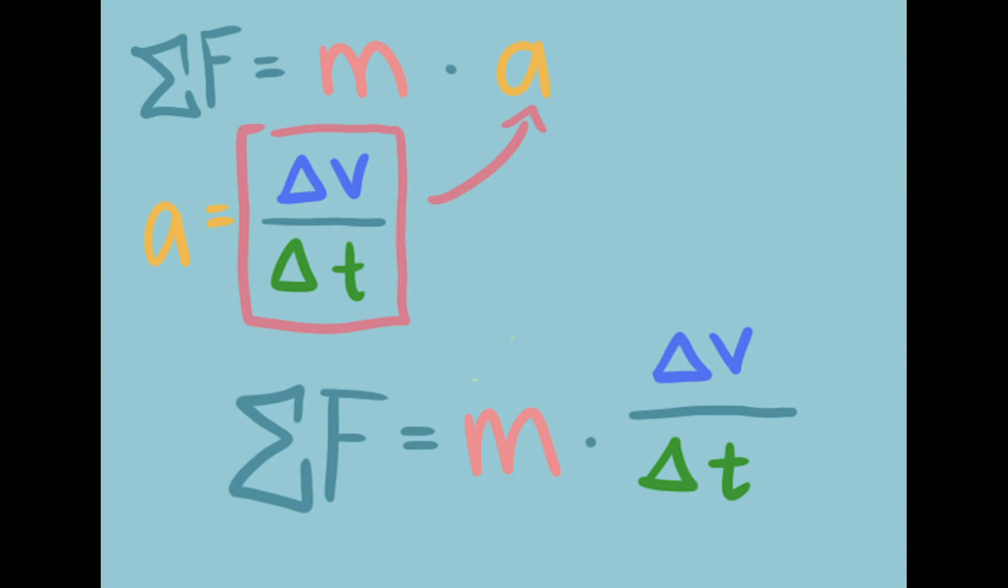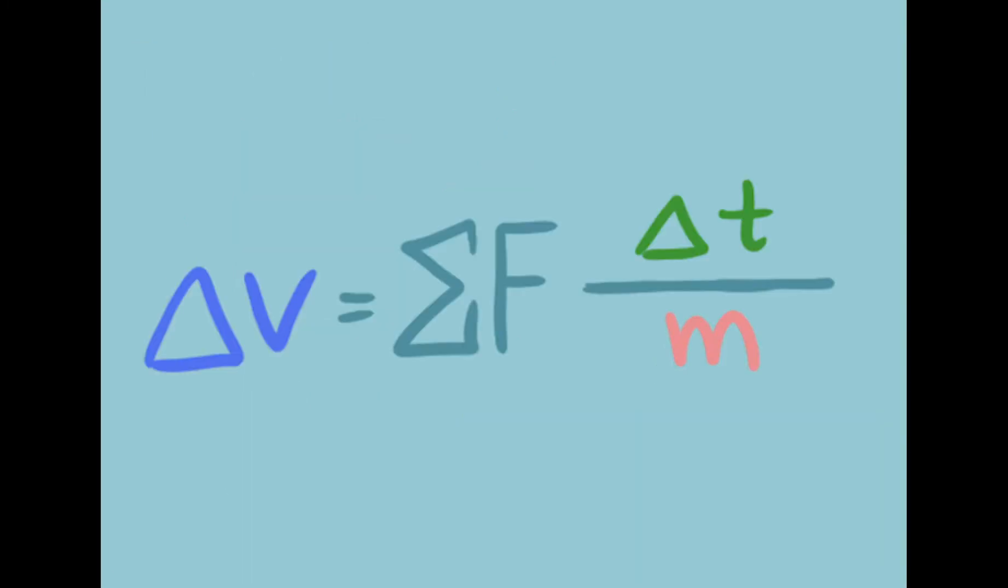Because we are trying to see which ball will travel faster, we want to isolate our velocity to the other side of the equation. This makes our new equation: change in velocity is equal to force times change in time over mass.